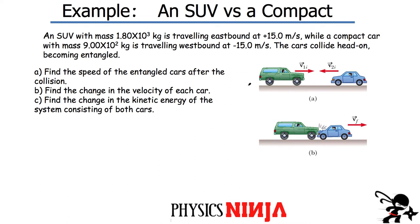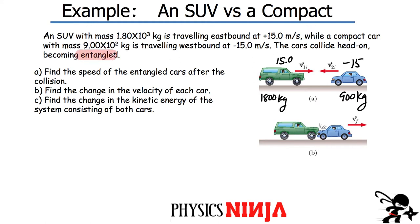We have an SUV which has a mass of 1,800 kilograms, traveling eastbound at 15 meters per second. The compact car has a mass of half that — 900 kg — traveling in the opposite direction at negative 15 meters per second. Negative just tells us the direction. They collide head on and become entangled, meaning after the collision you only have one piece of stuff.